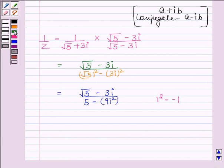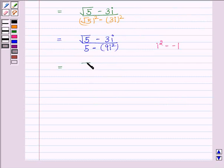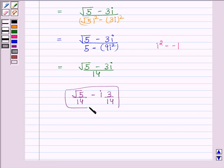We have root 5 minus 3 iota upon 40. Therefore, the multiplicative inverse of root 5 plus 3 iota is root 5 by 40 minus iota 3 by 40. This is our required answer.